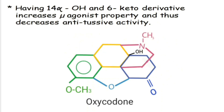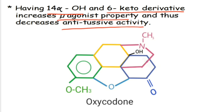Moreover, having a 14-alpha-OH and 6-keto derivative increases mu agonist property and thus decreases antitussive activity. The example is Oxycodone, which has a ketone group at C6 position and an alcoholic group at C14 position.